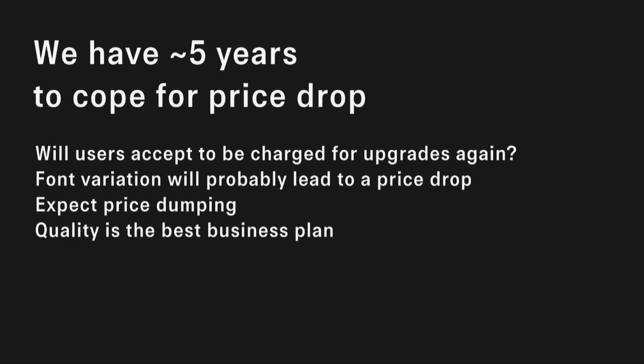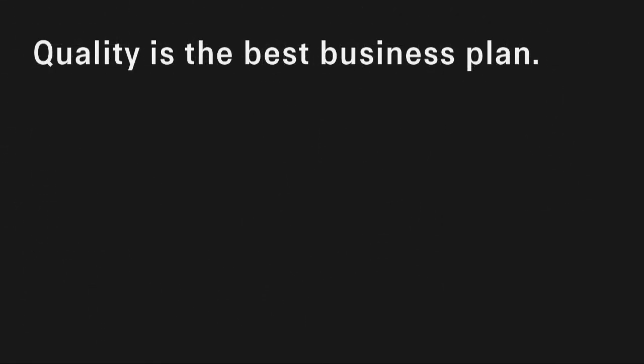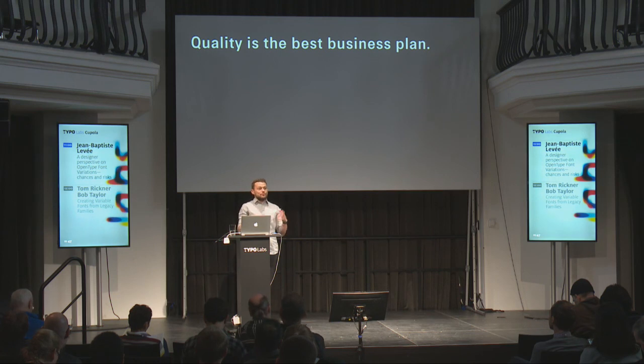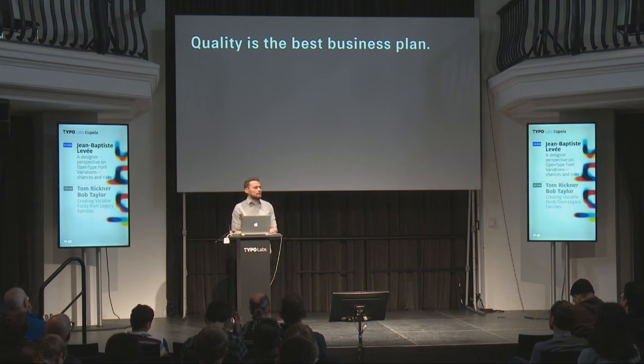So yes, font variations will probably lead to a price drop — we'd better prepare for that. And even more than a price drop, we can expect a dumping of prices. We've all seen those 90% discounts — don't think they will stop at the door of static OpenType. 'Hey, we have this six-axis family for only $15.' How do you compete with that as an independent foundry? Well, I have an idea, and that's how I'm going to conclude: focus on quality. That should be our only concern as designers. If your design is good enough, it will sell. That's what clients buy — they don't buy it for the cleanliness of your OpenType features. They buy for what they see, and if they see quality, that's how they will buy it. Thank you.